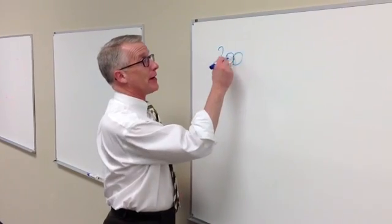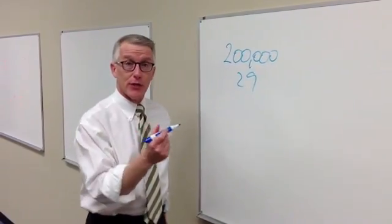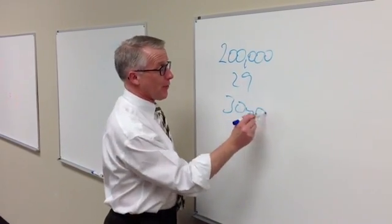Let's say you had a $200,000 balance right now with 29 years to go, and that's because you got a thirty-year fixed rate last year at 4.875%.